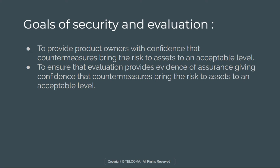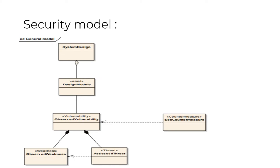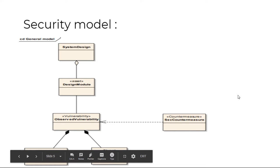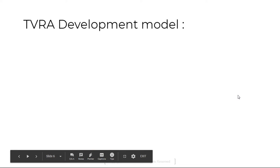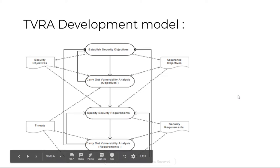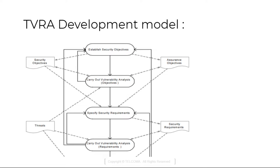The evaluation provides evidence of assurance and gives confidence that countermeasures bring the risk to assets to an acceptable level. The security model includes a general model, system design, design module, observed vulnerability, secure countermeasures, and the rest is continuous. This is the TVRA development model.